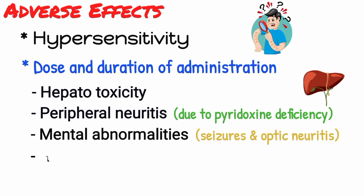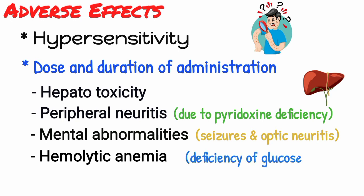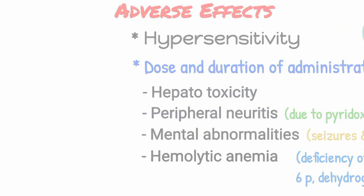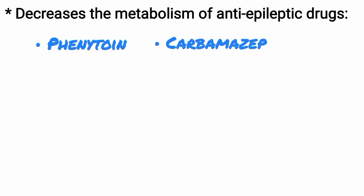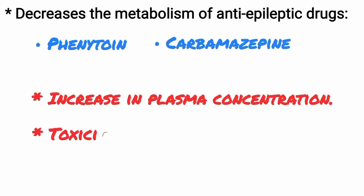Isoniazid may also cause hemolytic anemia in individuals with deficiency of the enzyme glucose-6-phosphate dehydrogenase. It also decreases the metabolism of anti-epileptic drugs like phenytoin and carbamazepine, resulting in an increase in plasma concentration and toxicity of these drugs.